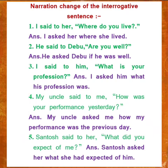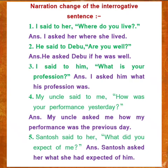Number two: She said to Debu, 'Are you well?' Answer will be: He asked Debu if he was well. Number three: I said to him, 'What is your profession?' The answer will be: I asked him what his profession was. Number four: My uncle said to me, 'How was your performance yesterday?' The answer will be: My uncle asked me how my performance was the previous day. Number five: Santosh said to her, 'What did you expect of me?' Answer will be: Santosh asked her what she had expected of him.